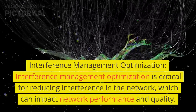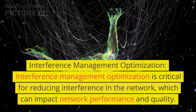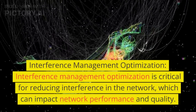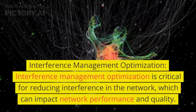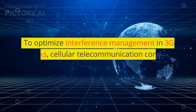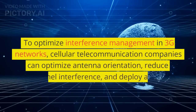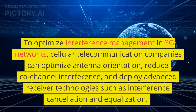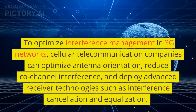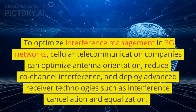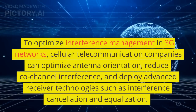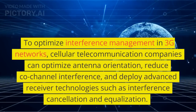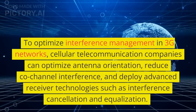Interference Management Optimization: Interference Management Optimization is critical for reducing interference in the network, which can impact network performance and quality. To optimize interference management in 3G networks, cellular telecommunication companies can optimize antenna orientation, reduce co-channel interference, and deploy advanced receiver technologies such as interference cancellation and equalization.